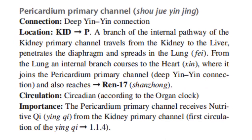The next connection is between the kidney and the pericardium. It is the deep yin-yin connection, located between the kidney and the pericardium. A branch of the internal pathway travels from the kidneys to the liver, penetrates the diaphragm, and spreads in the lung. From the lung, an internal branch courses to the heart where it joins the pericardium primary channel, which is the deep yin-yin connection, and also reaches REN 17. This follows the circadian cycle according to the organ clock. The pericardium primary channel receives the nutritive qi or yin qi from the kidney primary channel in the first circulation of the yin qi.